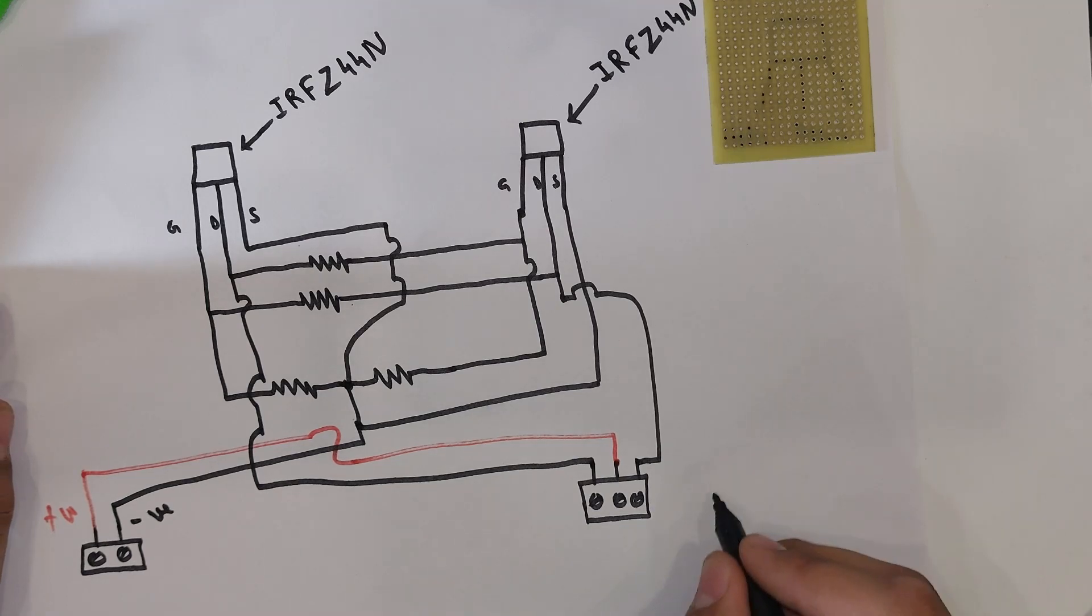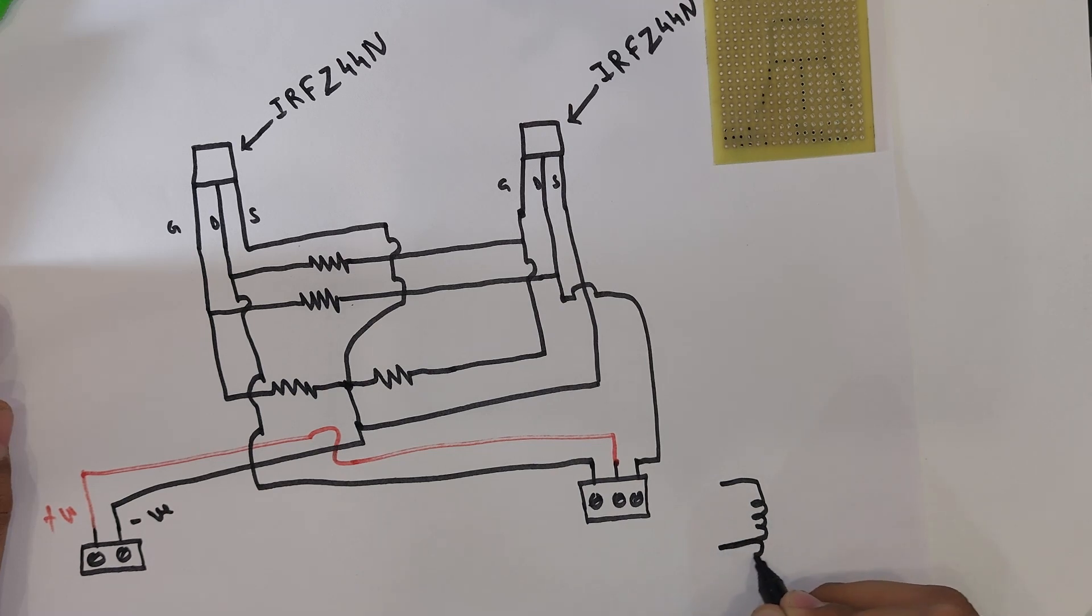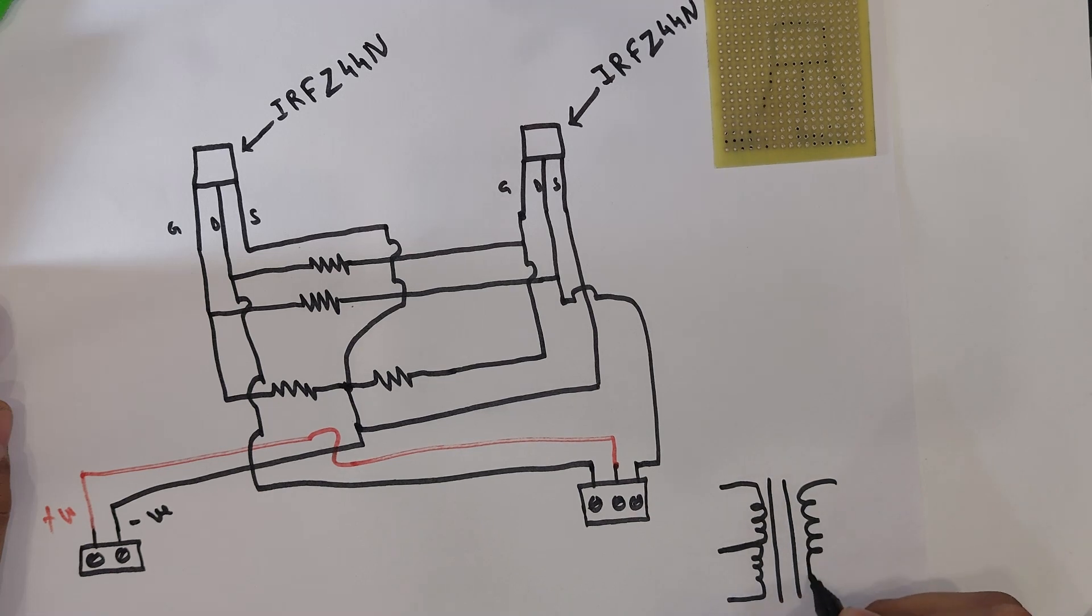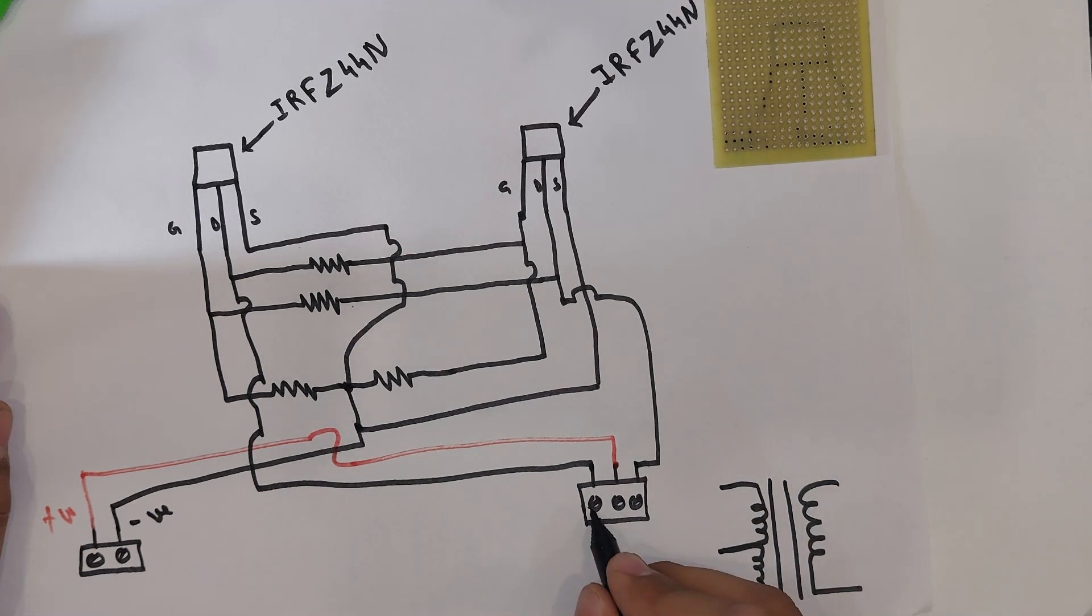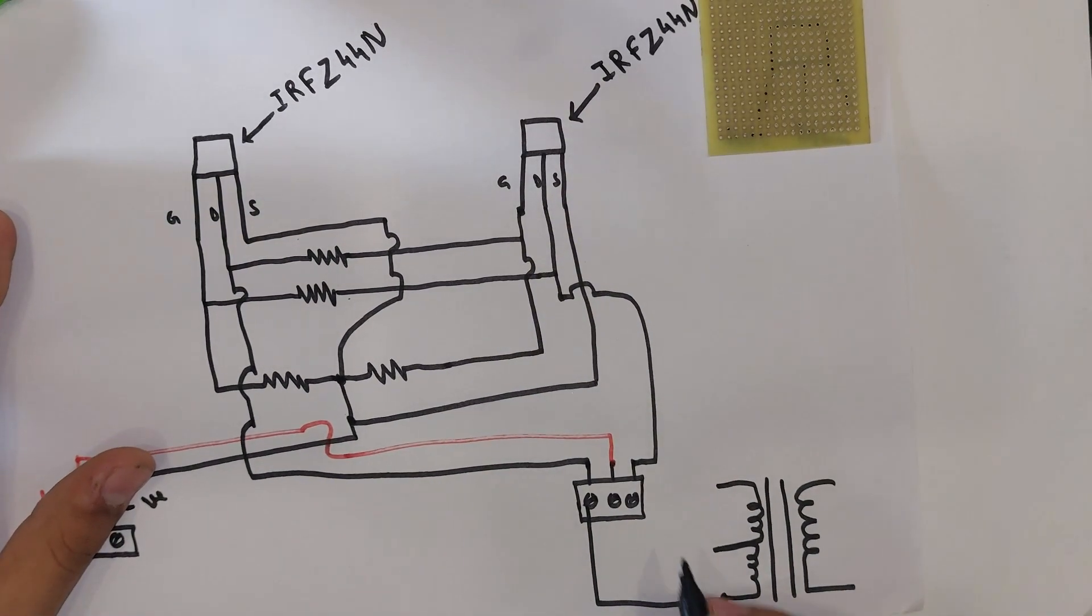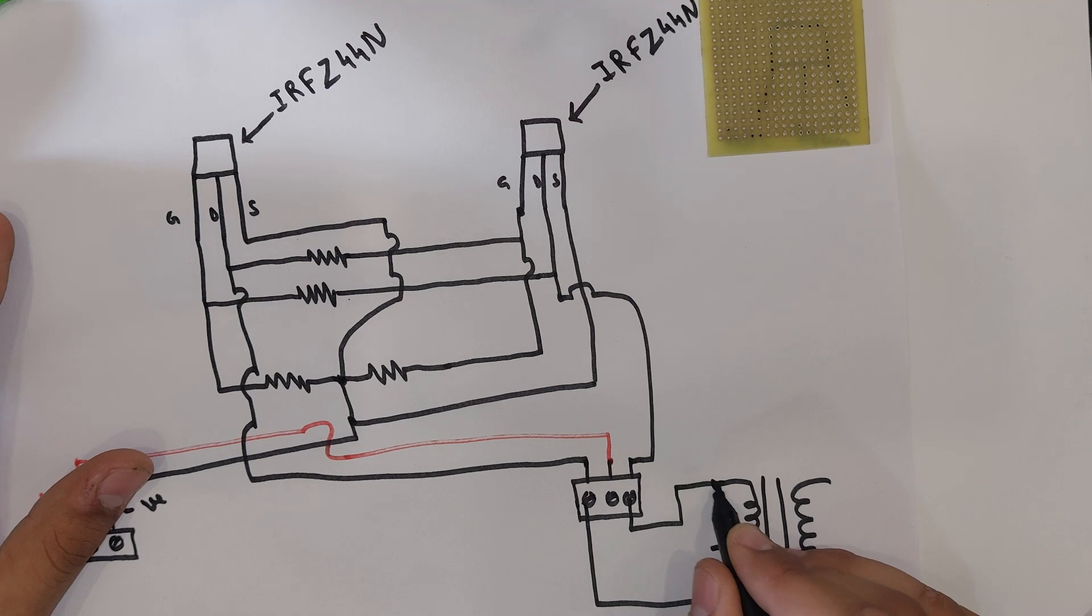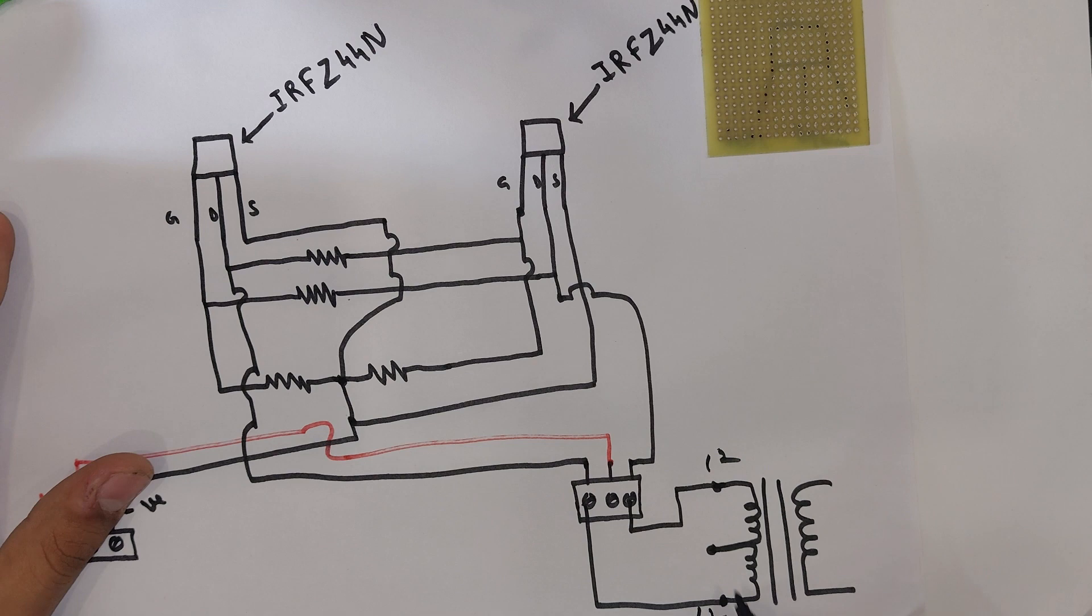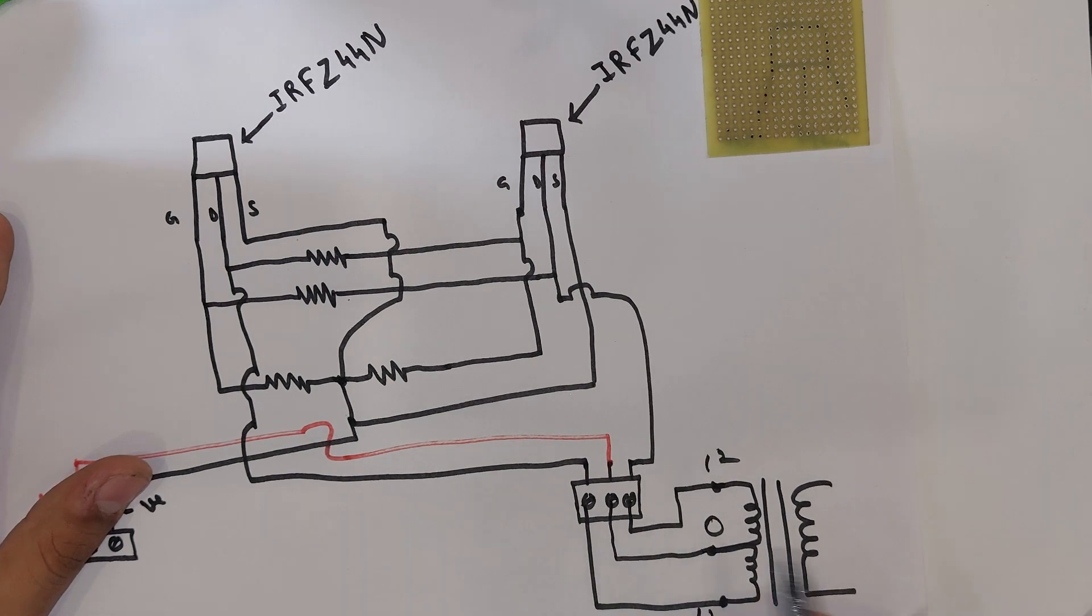Now, we take a 120 to 12V transformer for making the inverter. We connect the first drain output to the 12V terminal of the transformer and the second drain also connects to another 12V terminal. The 0V terminal of the transformer is connected to the positive terminal of the battery.